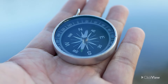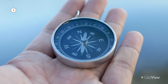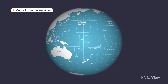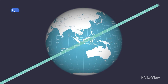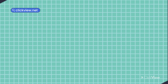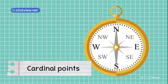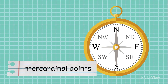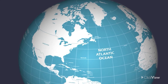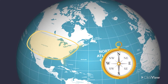The cardinal and intercardinal points on a compass are used to describe the relative location of places to each other. A compass displays cardinal points — north, south, east, and west — as well as intercardinal points: northeast, southeast, northwest, and southwest. For example, we could say the United States is southwest of Iceland.